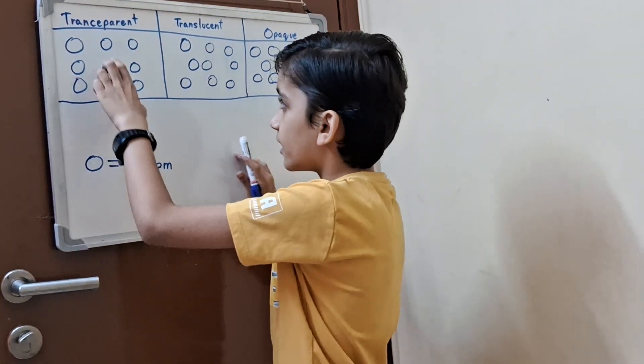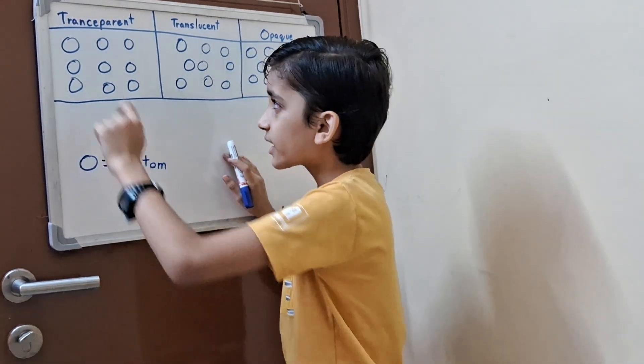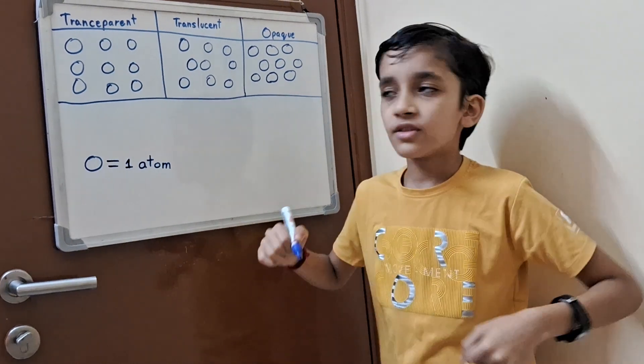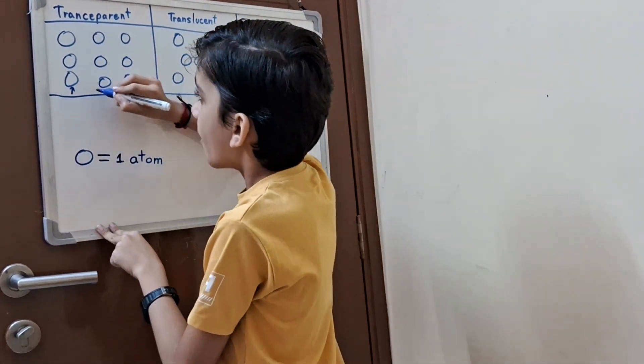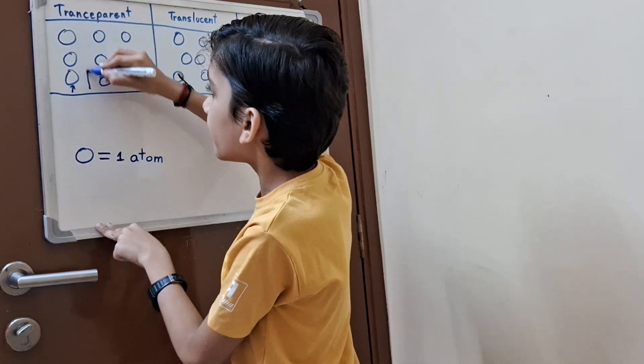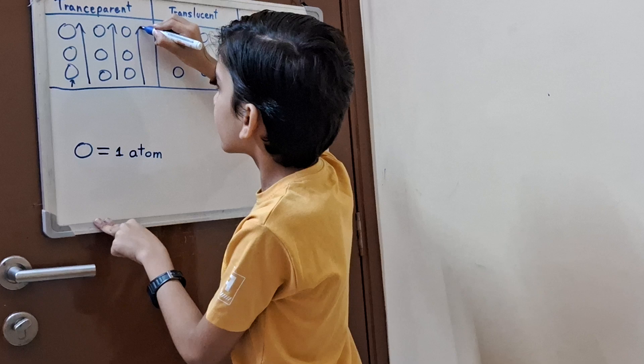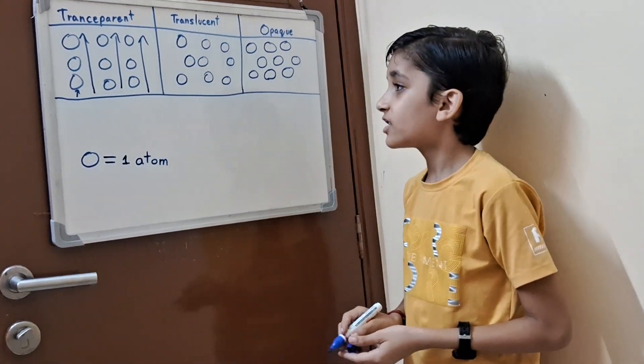So now this circle is one atom, and I have made different arrangements. First is transparent. Light can't pass through right here, but it can evenly pass through right here. And we can clearly see an image. So now this is transparent.